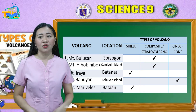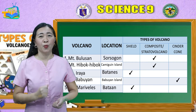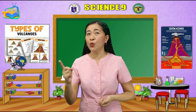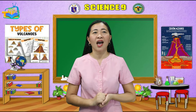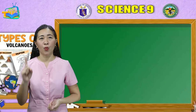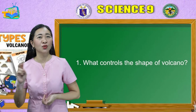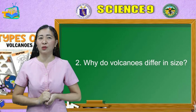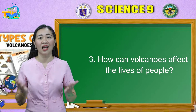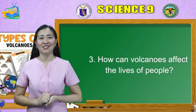If these are your answers, then you are spectacular! After classifying and knowing the locations of different volcanoes, answer the following guide questions: Number 1 — What controls the shape of a volcano? Number 2 — Why do volcanoes differ in size? And number 3 — How can volcanoes affect the lives of people? I will give you 2 minutes to answer these.